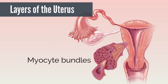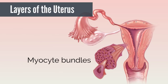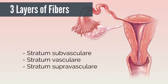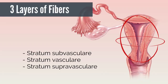The layers of the uterine myometrium are made up of millions of smooth muscle cells organized in layers which run in multiple directions. Uterine smooth muscle is made up of bundles of myocytes organized to form a continuous layer and give the uterus its contractile function. There are three layers of fibers — stratum subvasculare, stratum vasculare, and stratum supravasculare — that run circumferentially, longitudinally, and obliquely throughout the myometrium.